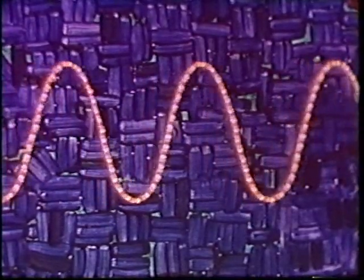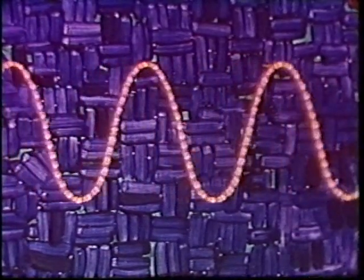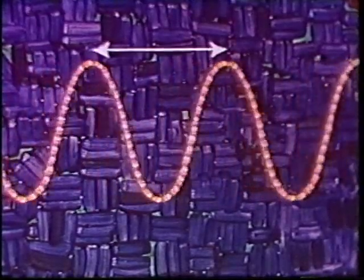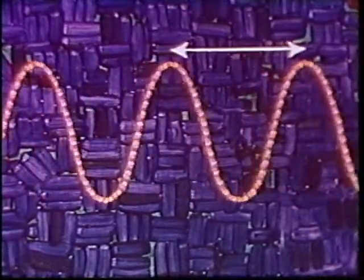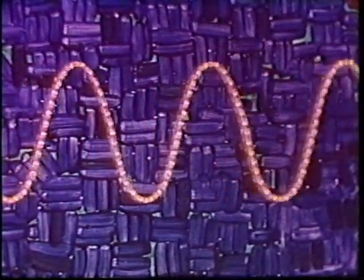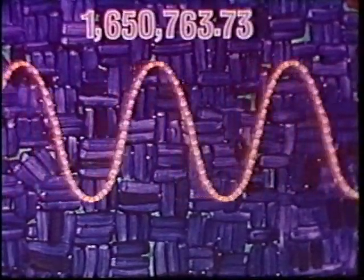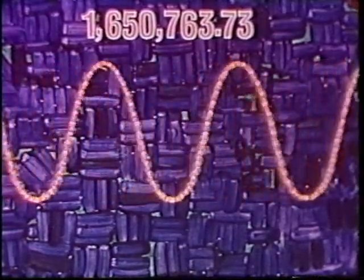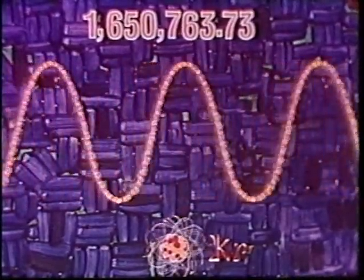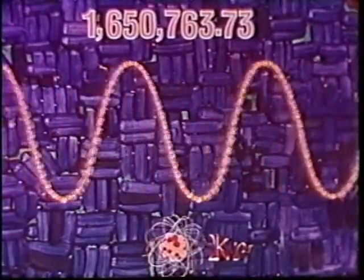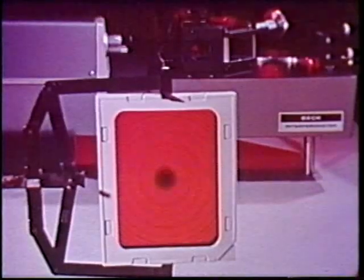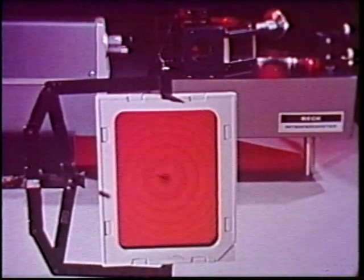It was inevitable that a more universal and less fragile standard of the meter had to be found. Light travels in waves. The length of a wave is determined by the distance from one crest to the next. In 1960, the official meter stick became a defined number of wavelengths emitted by the element Krypton. Now any well-equipped laboratory can have this master standard.